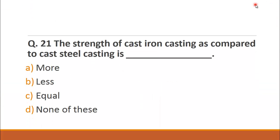The last question of this video is: The strength of cast iron casting compared to cast steel casting is? A. more, B. less, C. equal and D. none of these. So the right choice for this question is A. more.